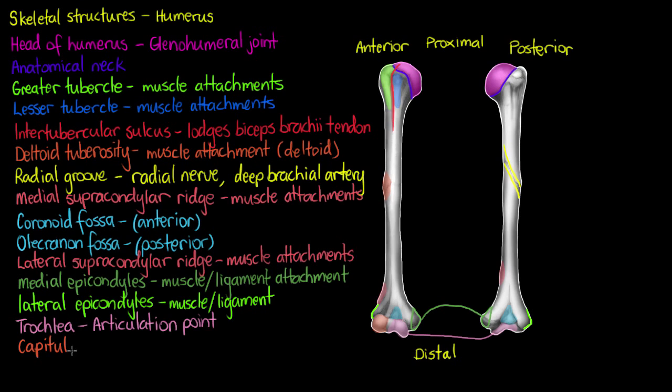In the orange, I've just highlighted the capitulum. The capitulum, again, is going to act as an articulation point, and we'll articulate with a depression in the head of our radius of the forearm.